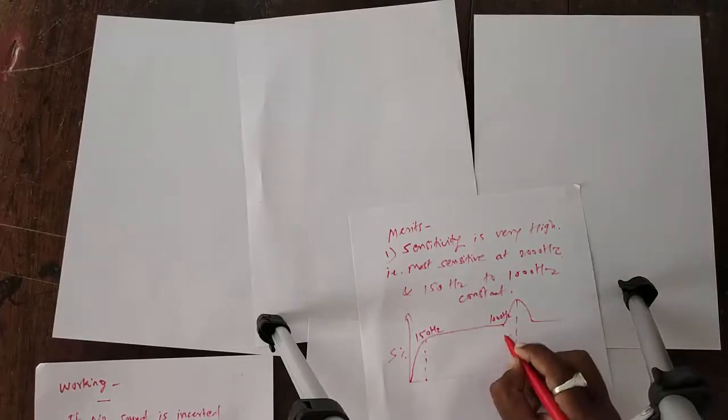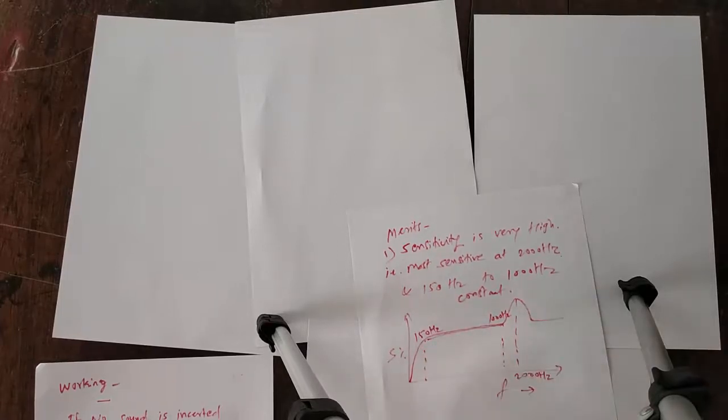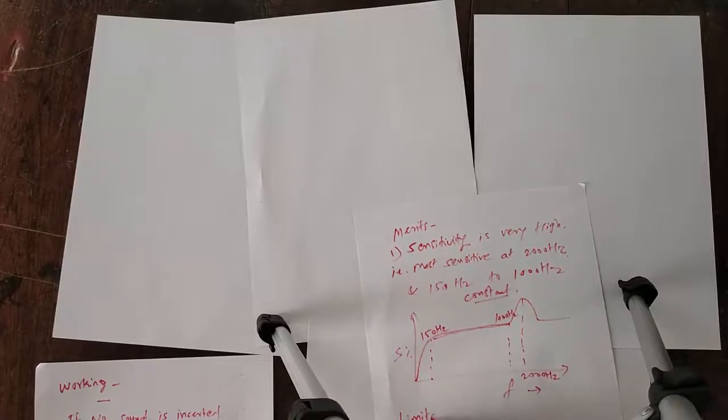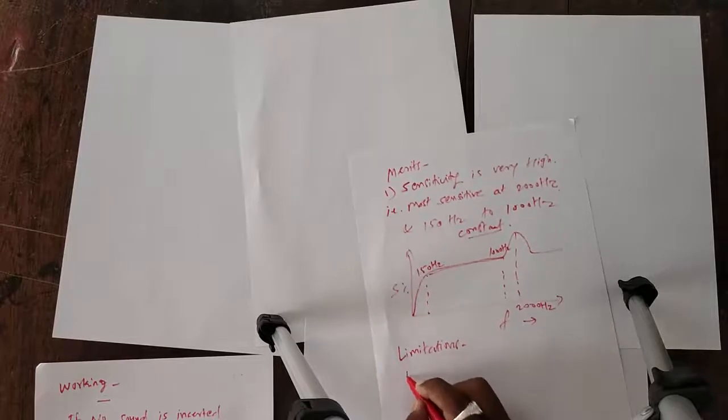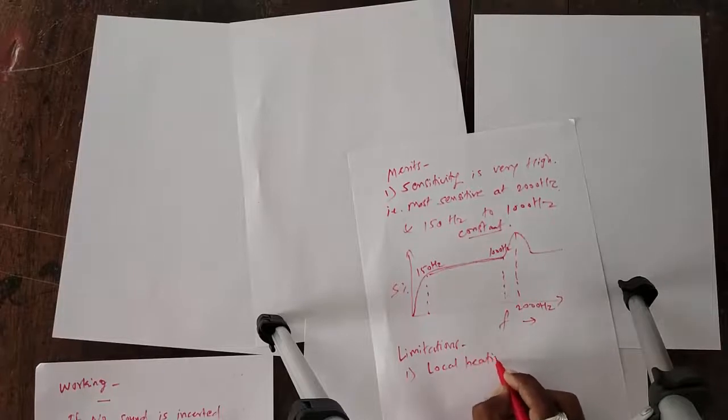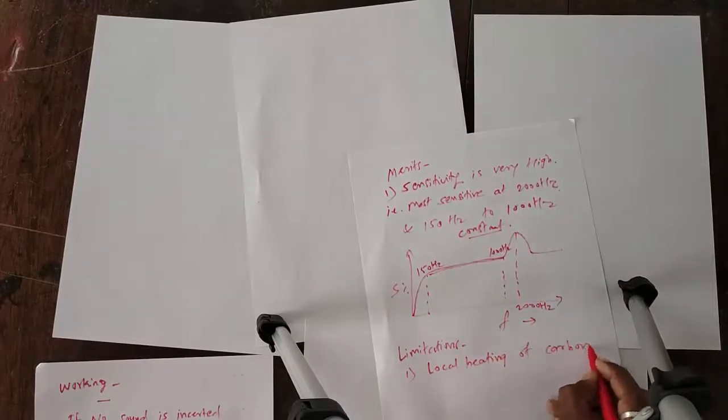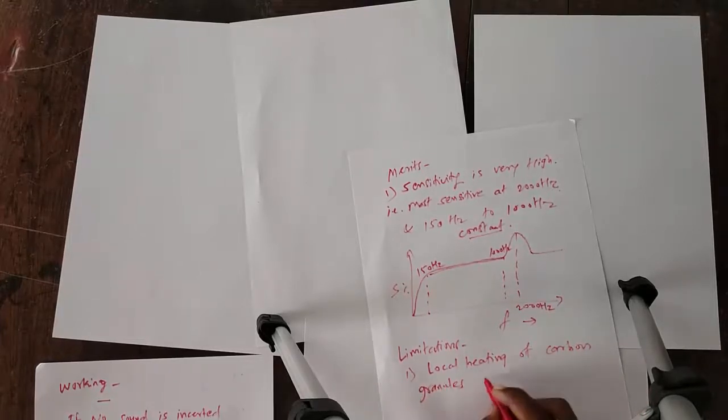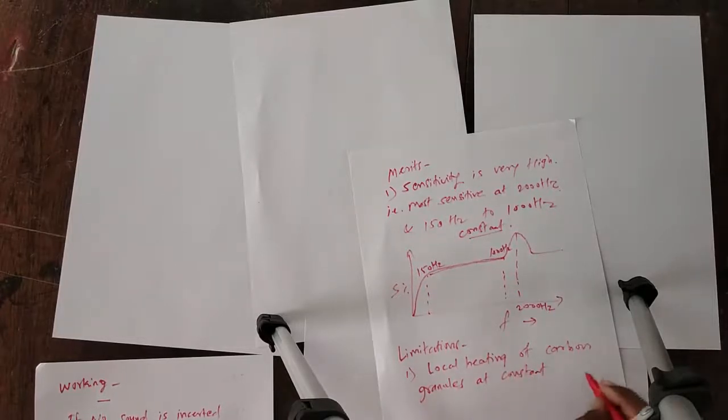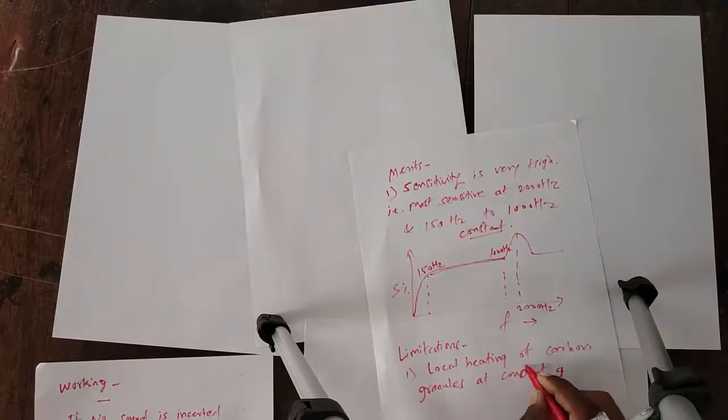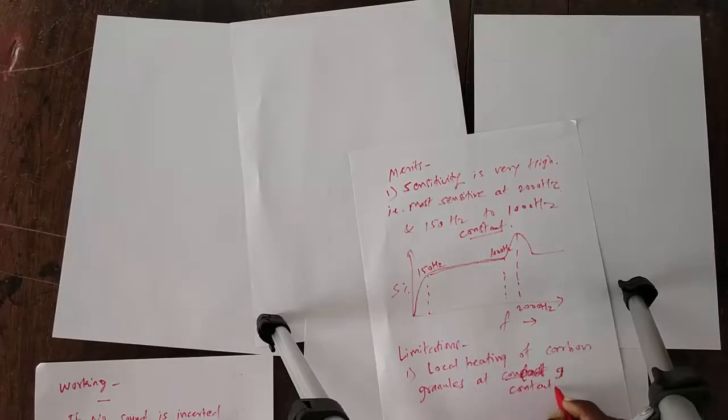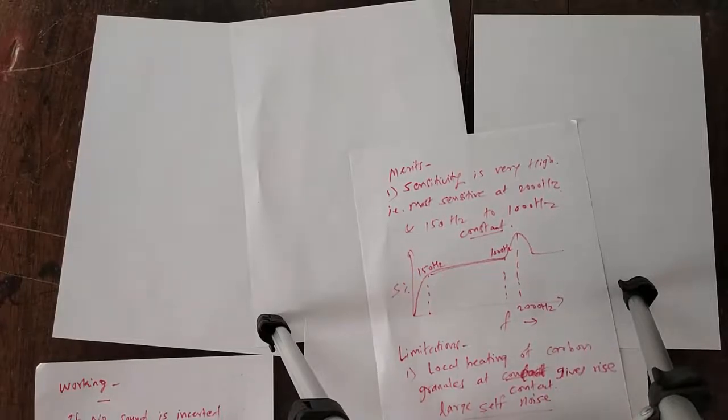Now, the limitations. The limitation of this carbon microphone is that large noise, local heating of carbon granules, and granules at contact give rise to large noise. This is the limitation of this carbon microphone. And second is, due to packaging, it reduces the sensitivity of the microphone.